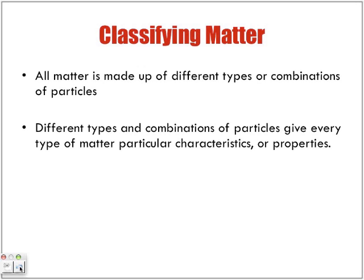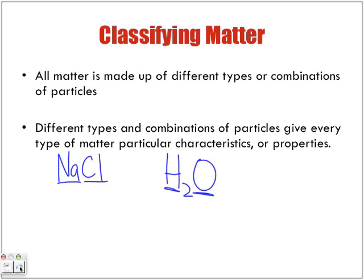If we look at something like salt, the formula for table salt is NaCl. We know that we're going to have an atom of sodium and an atom of chlorine. But then we'll have something like water, H2O. Both have different components to each particle.